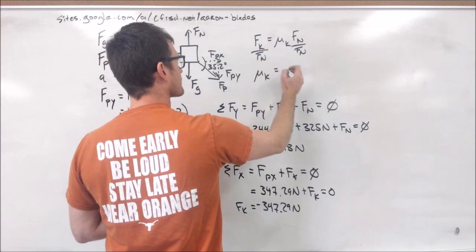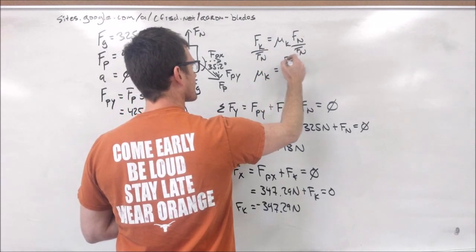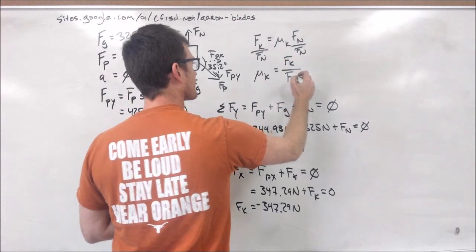Now if we divide both sides by our normal force, we end up with mu k equals Fk divided by Fn. We know all those numbers now.